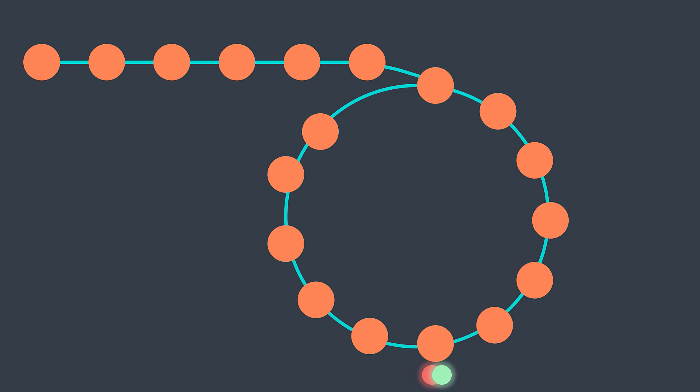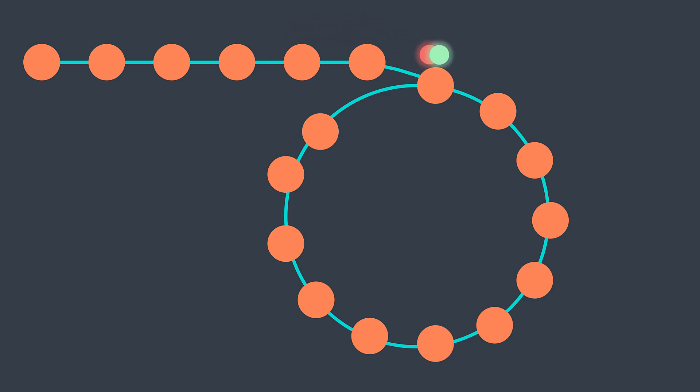To find the entry point, we put slow back at the head of the linked list and let them walk until they meet again, but this time both move by one node at a time. Now they're both at the entry point of the cycle. The amazing thing is that they will always meet again at the entry point — that's what we will see in the mathematical proof.